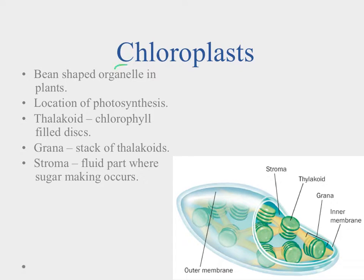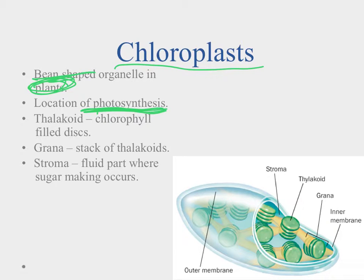We're going to start by talking about the chloroplasts. Chloroplasts are this bean-shaped organelle that we find in plants. It's a really important organelle in a plant cell because this is the site of photosynthesis, and we'll talk about photosynthesis a little bit later in the course. Inside the chloroplasts, you'll notice that it has an outer and an inner membrane, so it has two membranes that separate it from the rest of the cell.